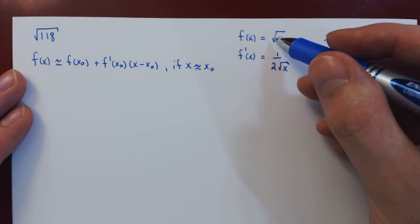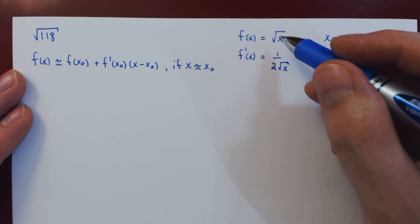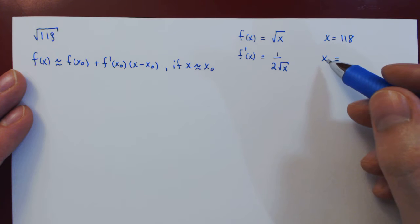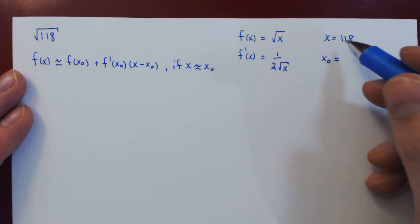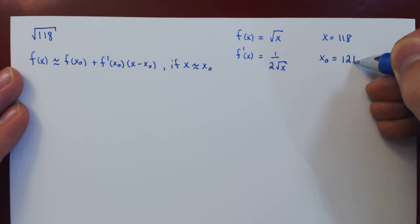Well, the square root can be easily evaluated if we take the square root of a perfect square. So we would like to have x₀ to be a perfect square close to 118. That number is, of course, 121, as 121 is 11 squared.